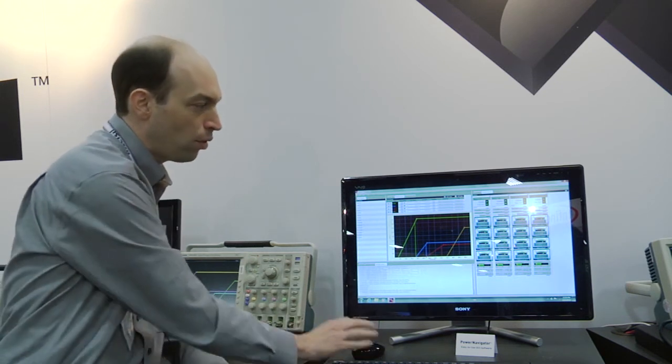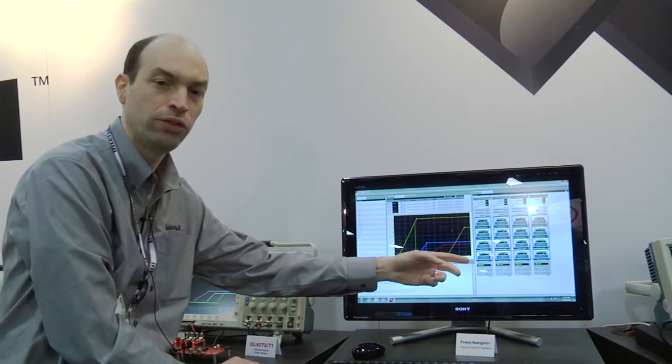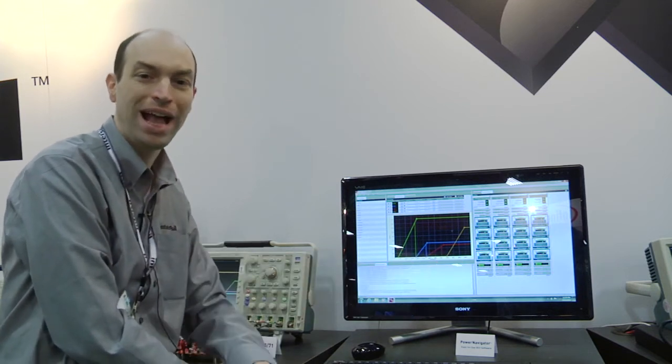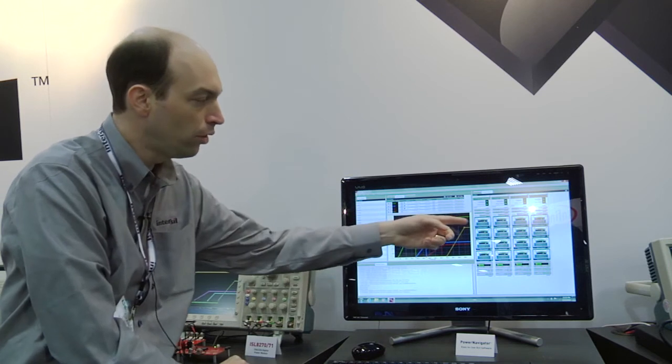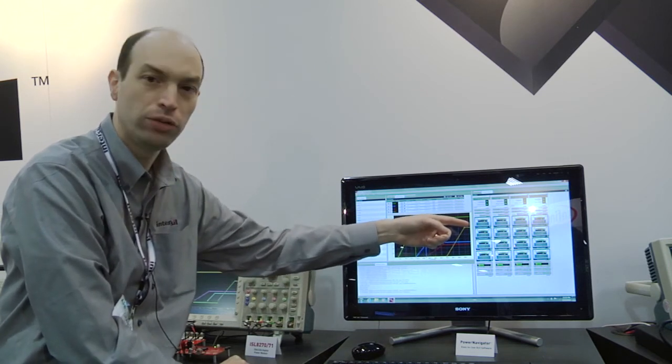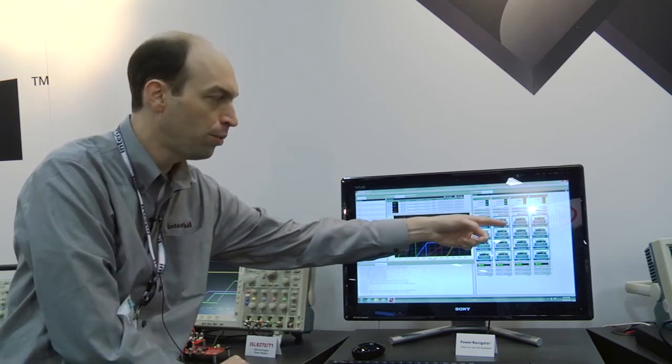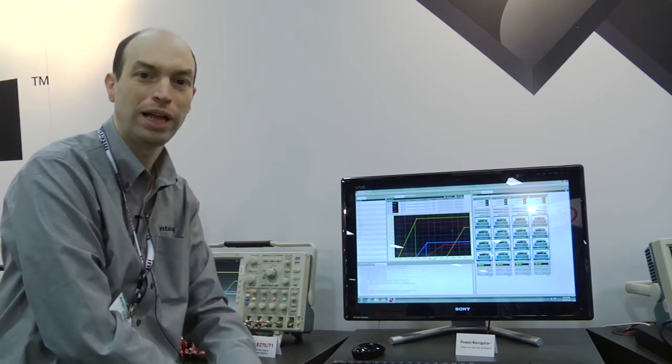Once the device is set up, we have the products running and as you can see, you can monitor every aspect of the power supply through the GUI. Those four outputs we have running 1.2 volts, 1 volt, 2.4 and 3.3 volt output voltages.